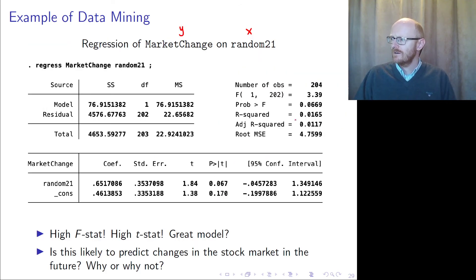So if you make a simple regression of the market change on that random 21, because it was random 21 which was the sequence which actually turned out to be significant in explaining some of the variation in the market.